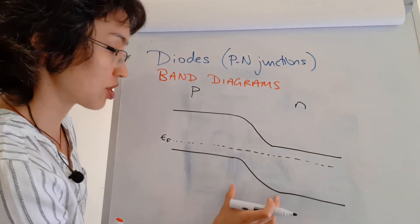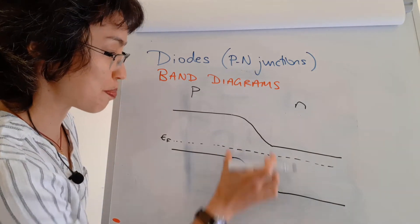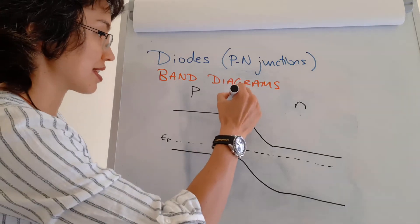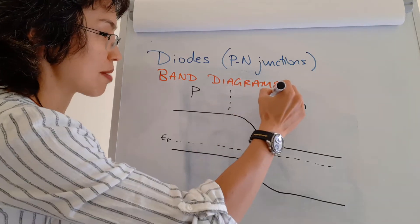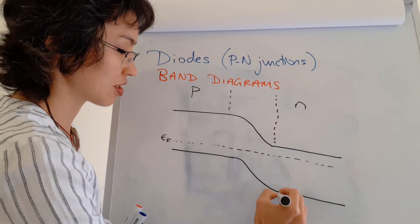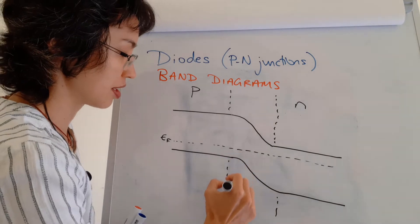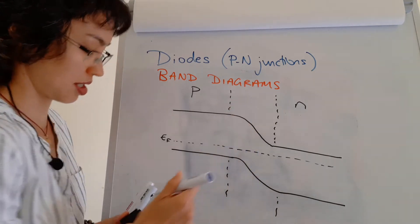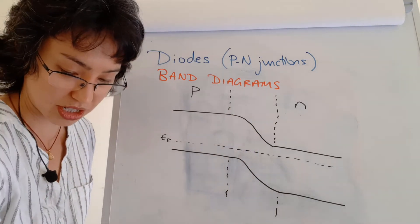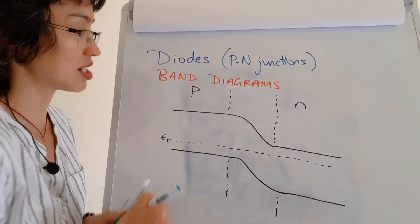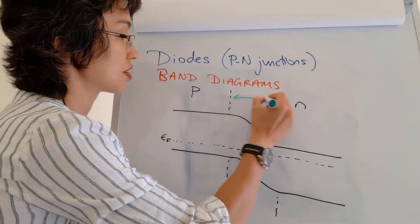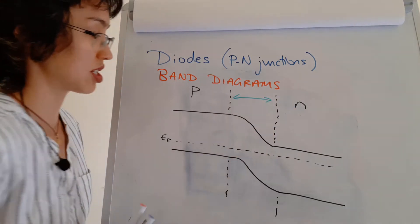At the junction, the bands are bent, and it is this band bending that represents the depletion region within the PN junction semiconductor.